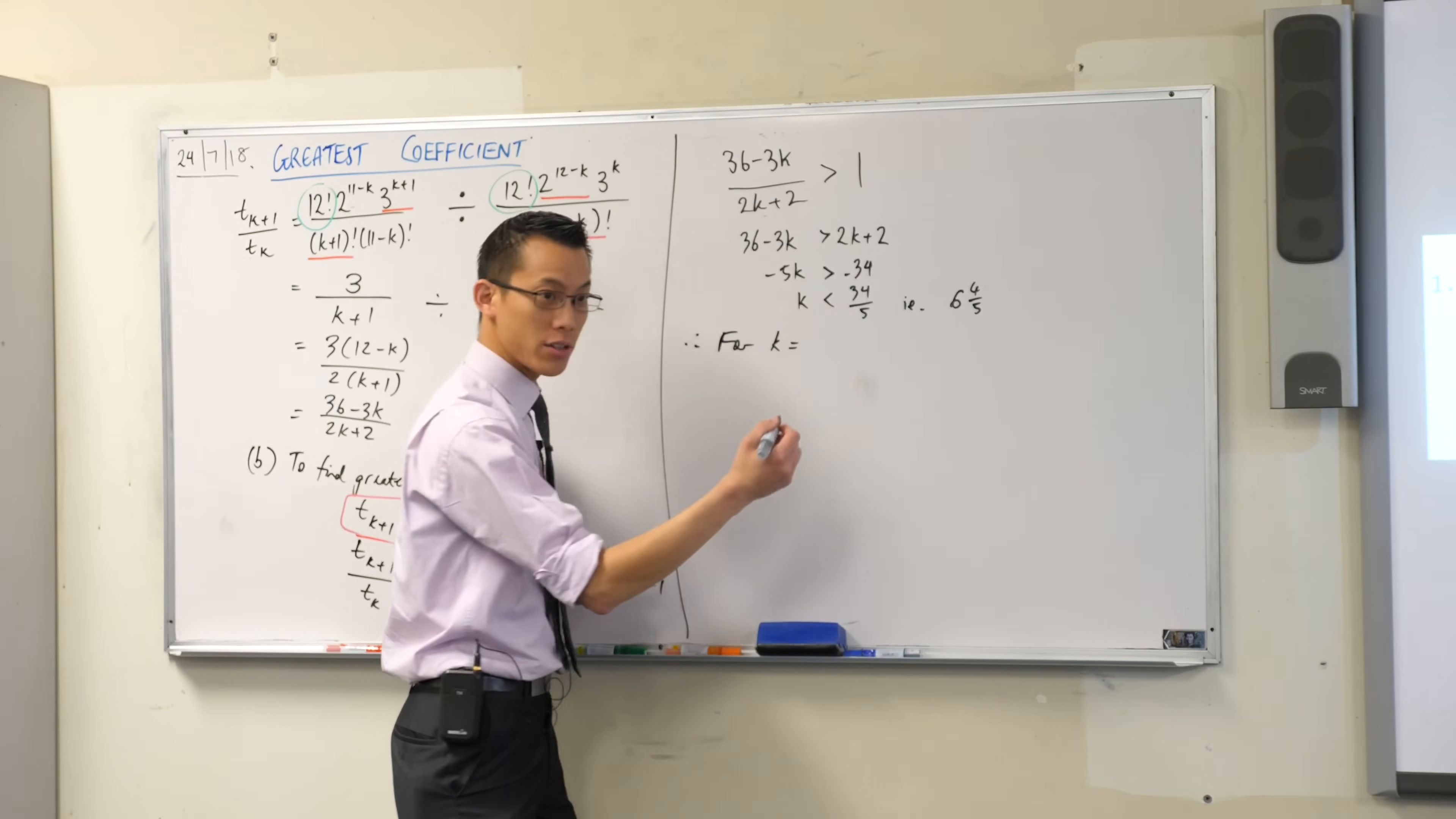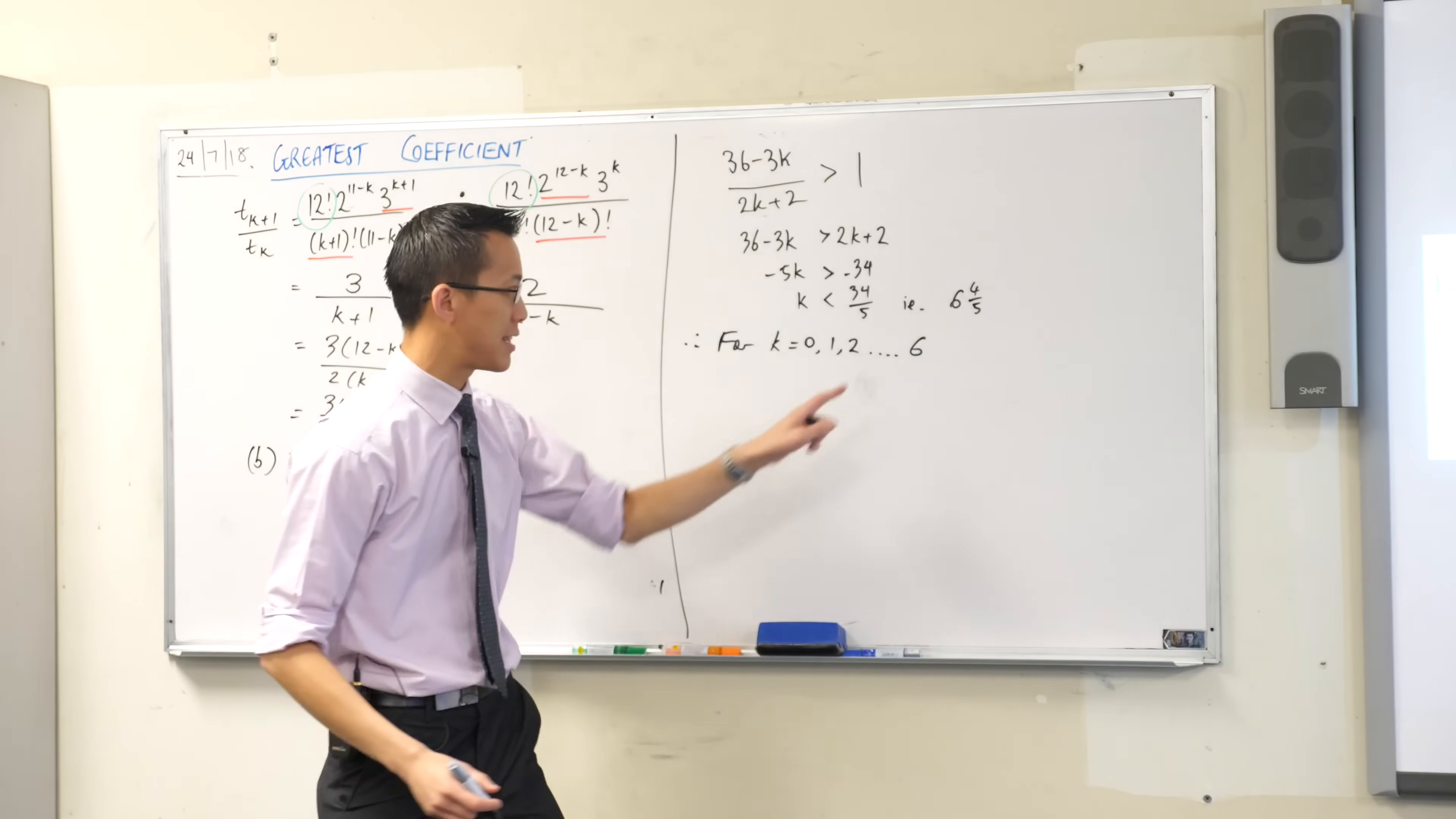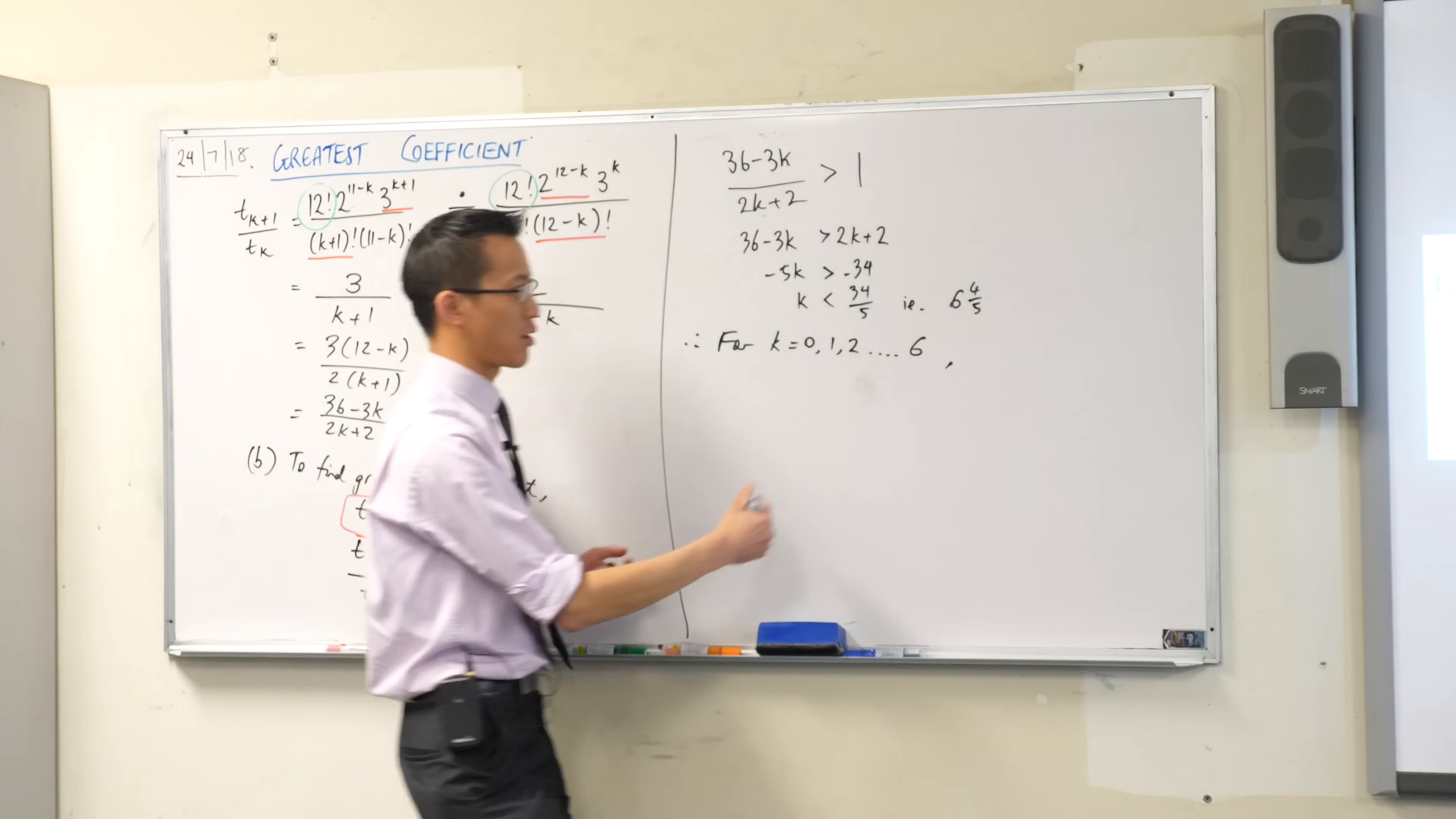for k equals, now what values will it work for? 0, 1, 2, all the way up until 6, right? You can't say 7 because that doesn't satisfy this inequality. For these values of k, my inequality is true. The one I started with, right? t sub k+1 will be greater than t sub k. So I'm going to write that down.